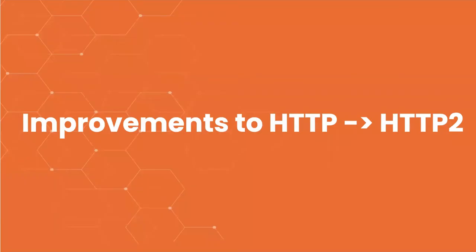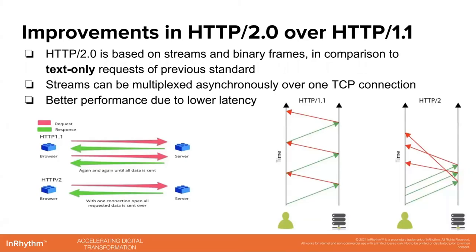So what are some of the improvements of HTTP 2 over HTTP 1.1? HTTP 2 is based on streams. Before this new version, HTTP was only meant for text-only requests. These streams can also be multiplexed — meaning you can send multiple requests asynchronously instead of waiting for one request to come back before you can send another one. All of this can happen over a single TCP connection, which is another protocol used in the network layer. This overall means you get better performance and reduced latency.